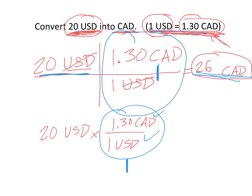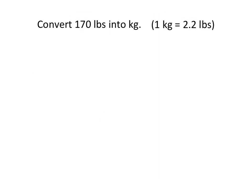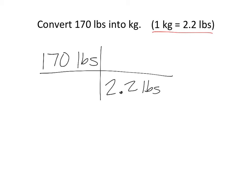But let's try another one. So here I'm asked to convert 170 pounds into kilograms. So I'm just going to start by writing 170 pounds down. I'm going to set up my fence post. I want to cancel pounds. So I look up here and I say, okay, 1 kilogram is equal to 2.2 pounds. So I need to put pounds on the bottom, 2.2 pounds, and I'll put the 1 kilogram on top.